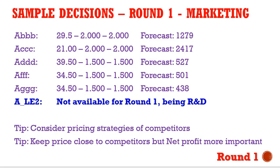For a sample, the suggested prices are: $21 for low-end, $29.50 for traditional, $39 for high-end, and $34.50 for both performance and size. But competitors can do the same, so consider lowering or raising the price a little to get more competitive pricing and good net profit. Do not dump the price — you can sell well but get no net profit.